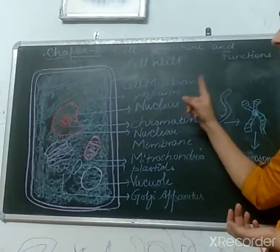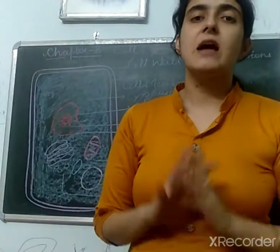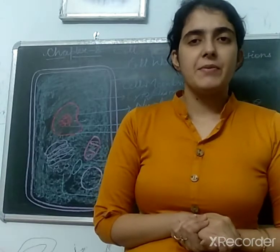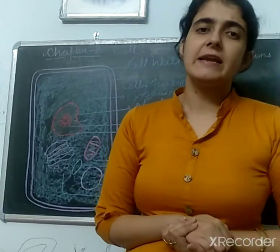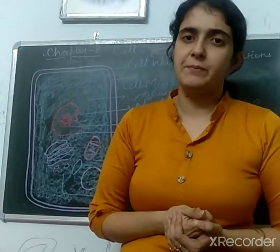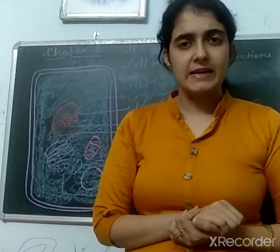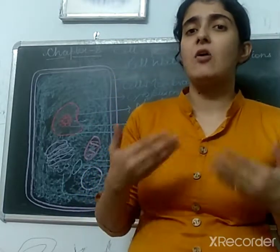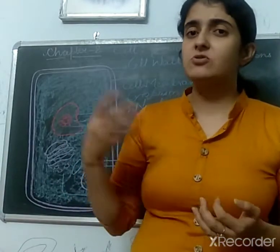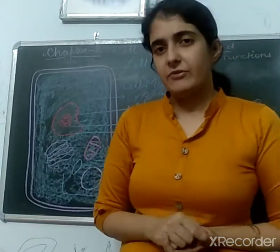The first one is cell membrane. Cell membrane is the outermost covering of a cell and it has a porous and permeable nature. Porous means it has some pores on it, and permeable means it allows the movement of substances to come in or go out from the cell.